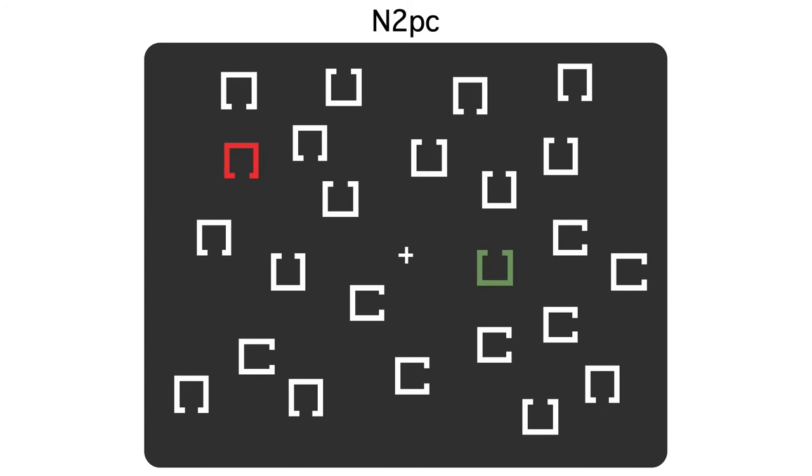For example, in the first experiment where we used the stimuli shown here, we didn't do a good job of equating the salience of the red and the green. The red item immediately popped out from the display, but the green item was a little harder to detect. So, the response times were about 50 milliseconds slower in the attend green condition than the attend red condition.